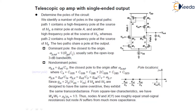Path 2 contains a high-frequency pole at the source of M4, and the two paths share a pole at the output — the output pole ωp_out, equal to 1/(R_out · C_L). This output pole is usually close to the origin and is also called the dominant pole. It sets the open loop 3dB bandwidth, while the first non-dominant pole is the closest pole to the origin after ωp_out.